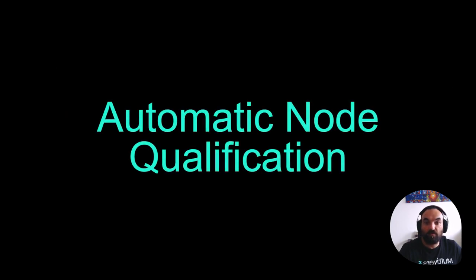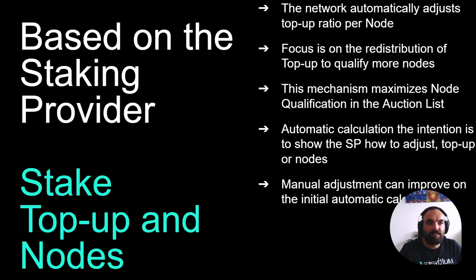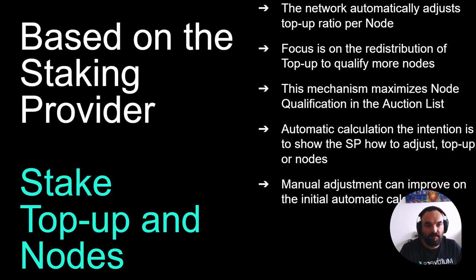Let's continue with automatic node qualification and what it means. This is a mechanism that automatically redistributes a staking provider's total top-up amount to the validator nodes they own. The system focuses on redistributing the top-up according to the NQT so that as many nodes as possible from each staking provider are qualified. This is a starting point — designed to show each staking provider how to adjust their top-up per node or the number of validating nodes. After this initial step, each staking provider must manually adjust according to the network NQT.